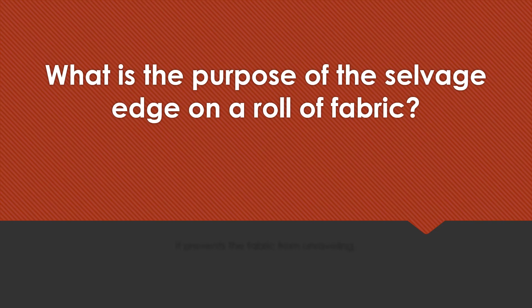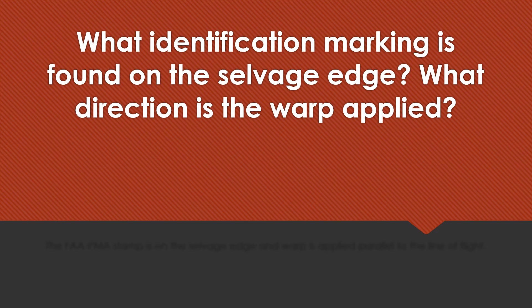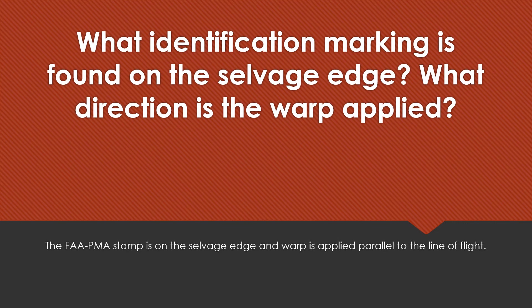What is the purpose of the selvedge edge on a roll of fabric? It prevents the fabric from unraveling. What identification marking is found on the selvedge edge and what direction is the warp applied? The FAA PMA stamp is on the selvedge edge and the warp is applied parallel to the line of flight.